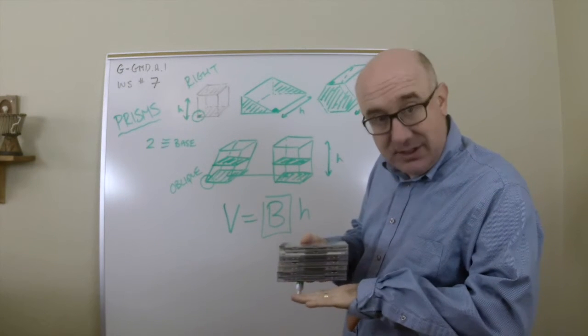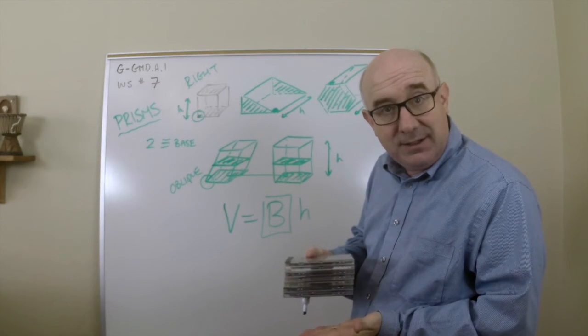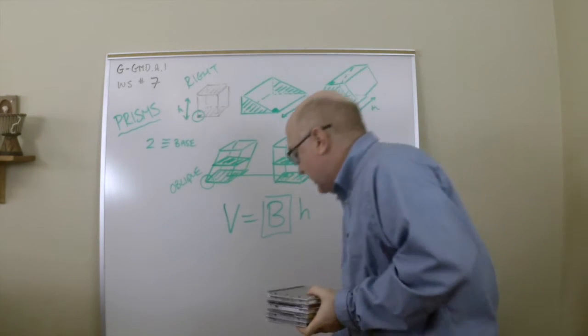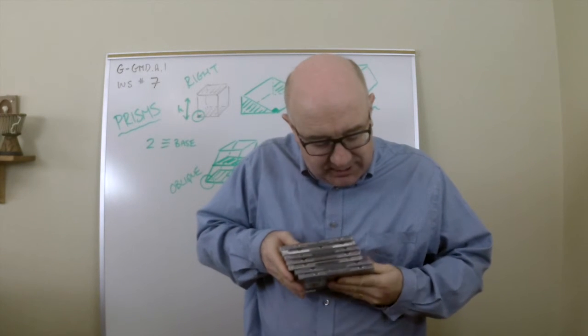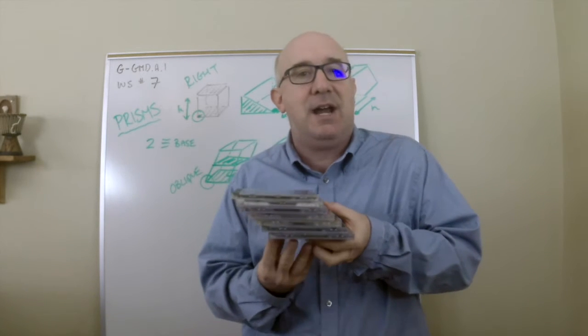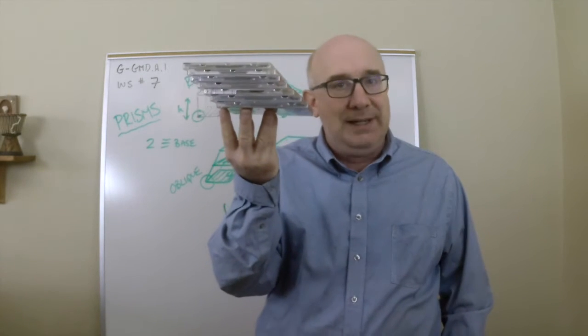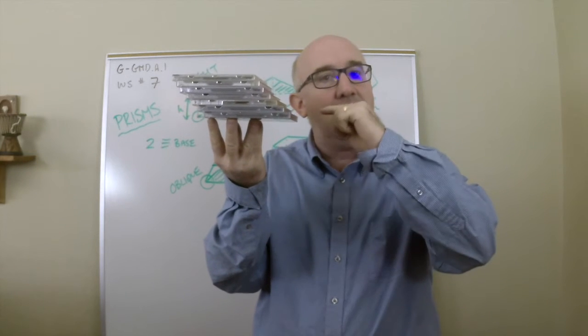So volume is calculated with prisms at least as one base area, so big B stands for base area, times the height. In other words, one CD case stacked five times, so one area times the height. Now again, Cavalieri said that would give you the same answer as if I bump these and give them a little bit of a sideways look to them, an oblique look to them.